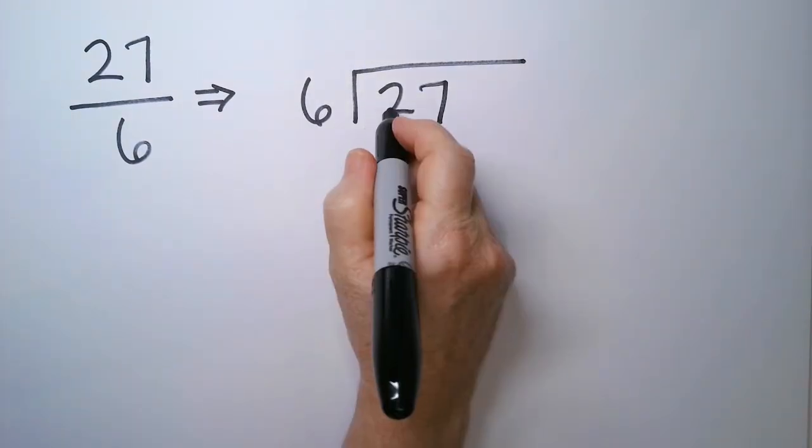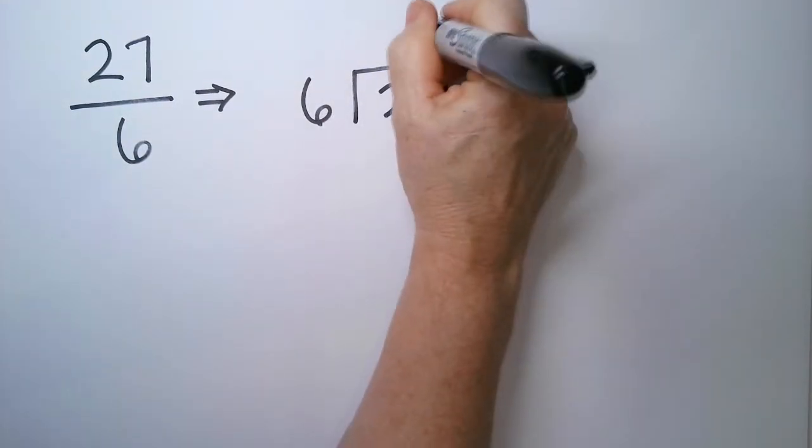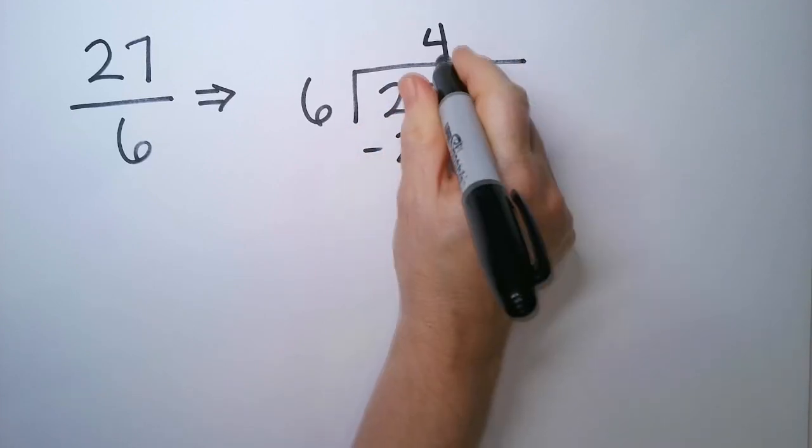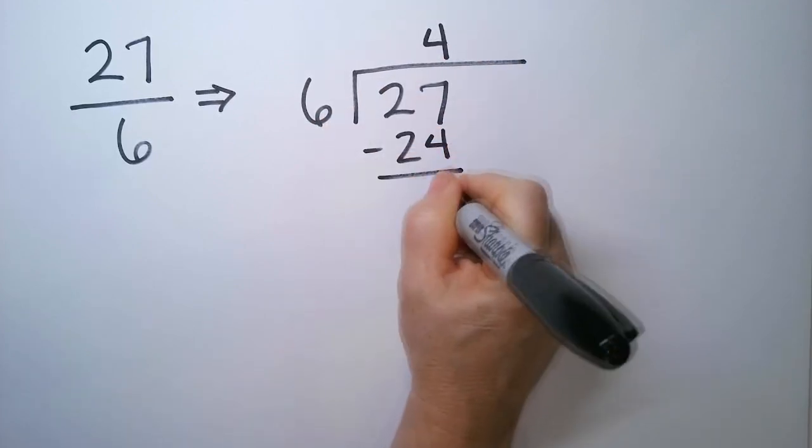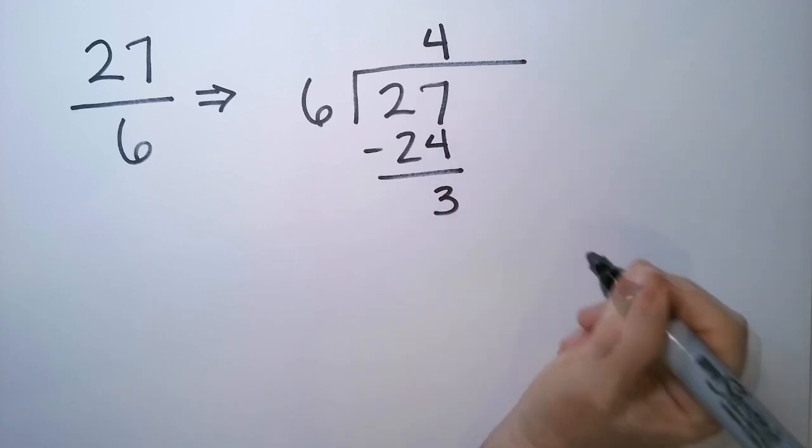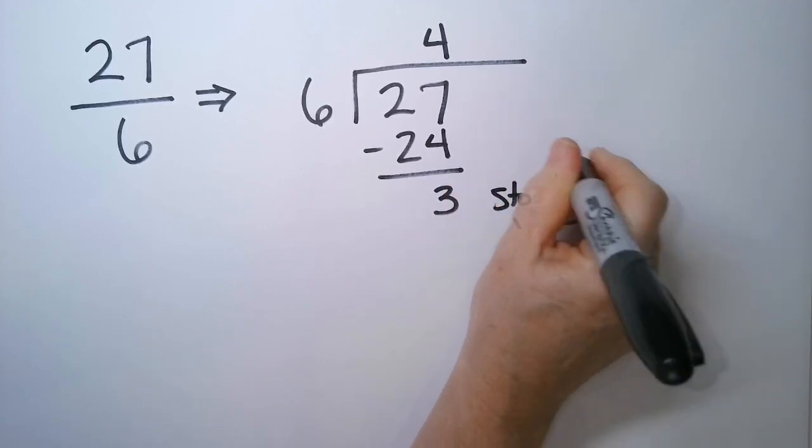6 doesn't go into 2, it goes into 27 though. It goes in 4 times, and 4 times 6 is 24. We subtract, take the difference, and we have a remainder of 3, and that's where I want you to stop, right there.